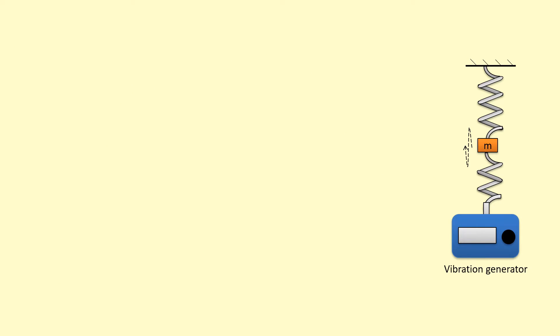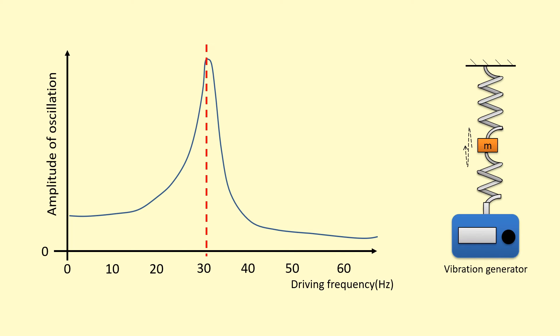Here I've got a set of springs attached to a mass and a vibration generator, and I'm going to apply a periodic force to the mass at different frequencies. If I plot the amplitude, I get a graph like this, and as you can see, the large amplitude oscillations occurring at 30 hertz show that resonance is occurring at 30 hertz.